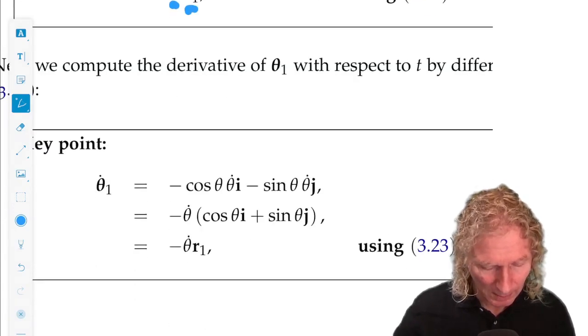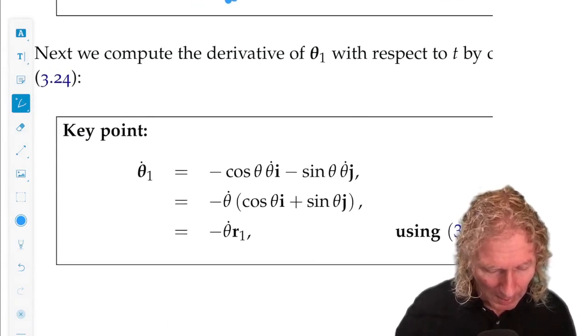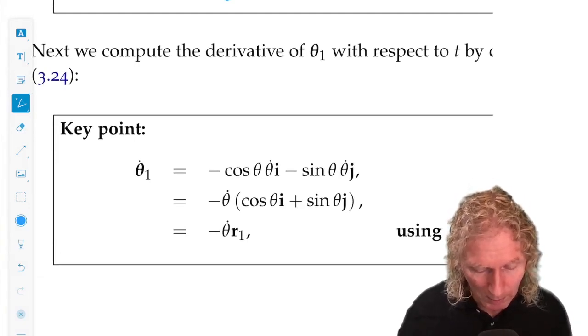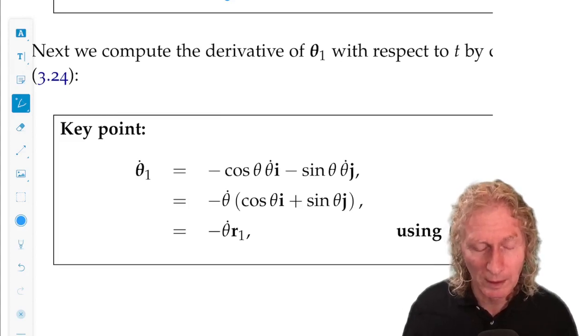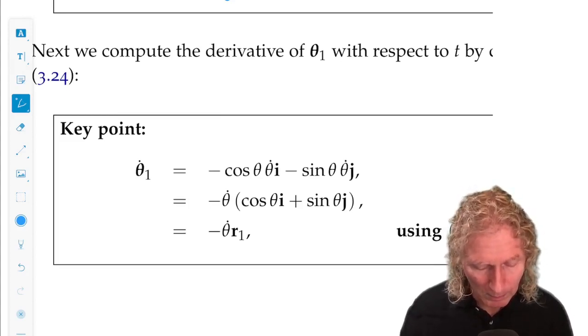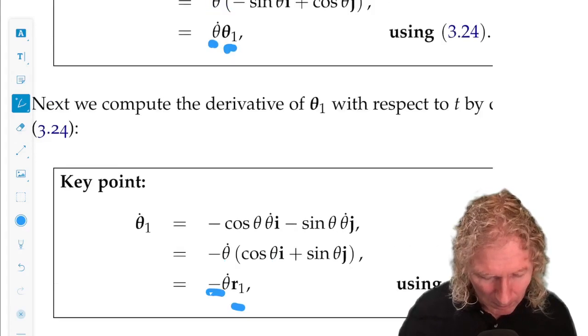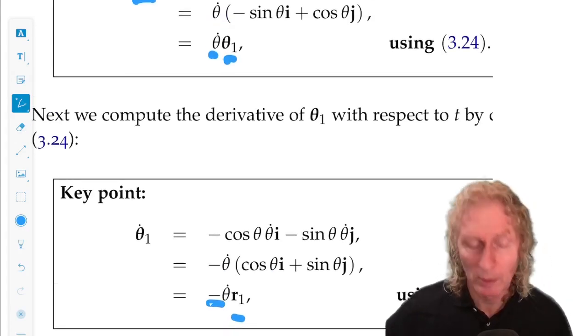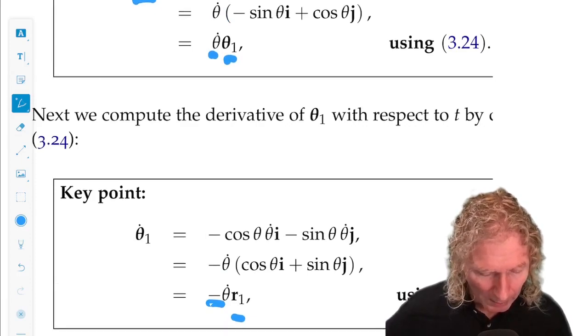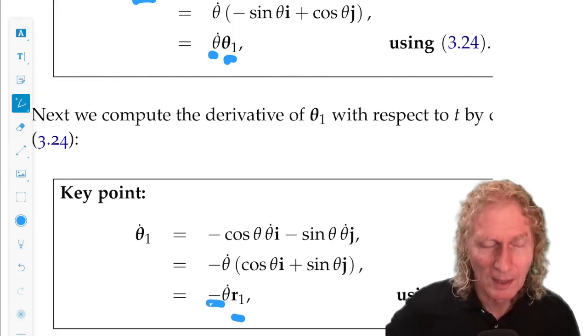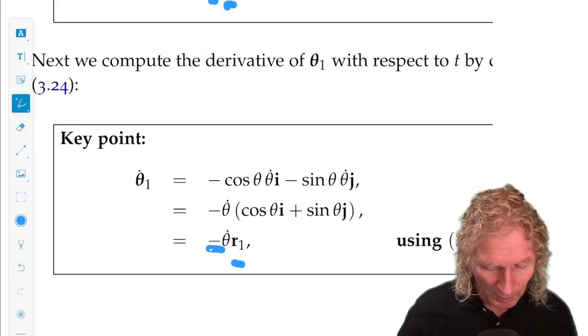That's nice and clean. And theta1 dot - we differentiate the definition of theta1 using the fact that i and j, their derivatives are zero, and we get minus theta dot r1. So that's a very interesting relationship between r1 dot and theta1 dot, and it's useful to think about that and what it may mean.